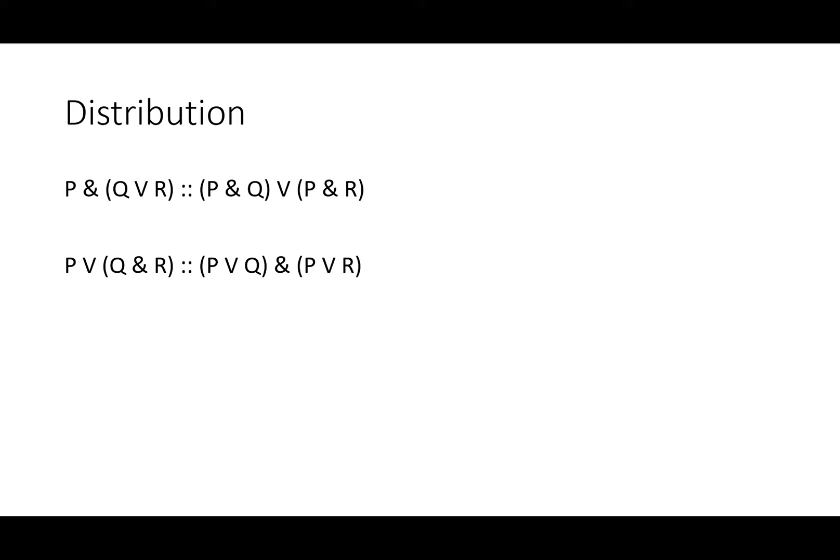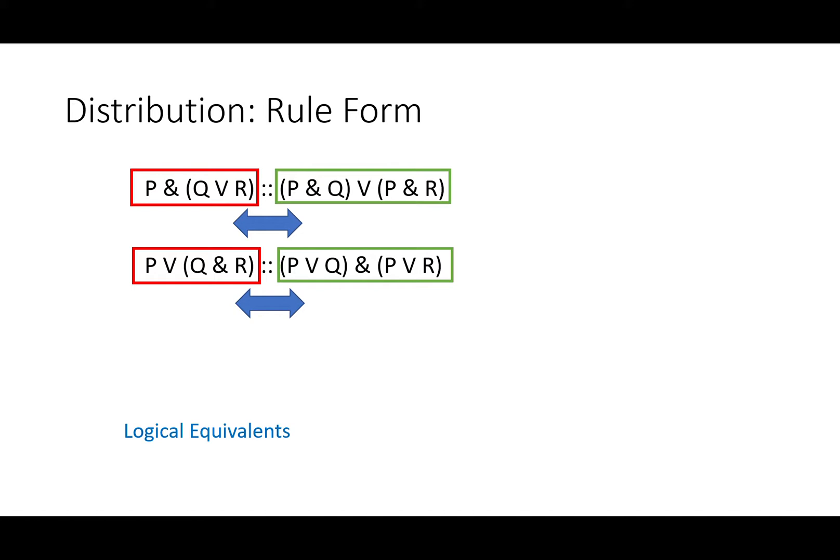If that sounds like a lot to take in, don't worry — it is — but we're going to go over it slowly and carefully. Like all rules of replacement, the left side and the right side of the four-dot symbol are two statements that say the same thing, at least as far as logic is concerned. They have the same truth tables, meaning they're true or false under all the same inputs. You can substitute either one for the other in a whole line or a partial line because these sentences are logical equivalents.